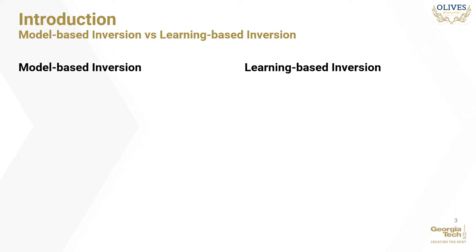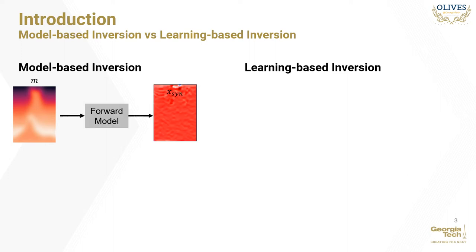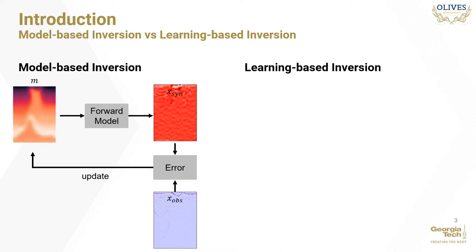Inversion may either be done in a deterministic fashion, also called model-based inversion, or it may be learned in a supervised fashion from training samples in what is called learning-based inversion. Model-based inversion begins with a smooth model of the subsurface physical rock parameters. It is then forward modeled to produce a synthetic seismic. The error between the synthetic seismic and the observed or actual seismic is computed, and this error is then used to update the initial model's parameters. At the next iteration, the updated model produces a synthetic seismic that is hopefully closer to the observed seismic. This process is repeated many times until the synthetic and observed seismic data match to an acceptable degree, which is hopefully also the point when the initial model converges to the true subsurface model.